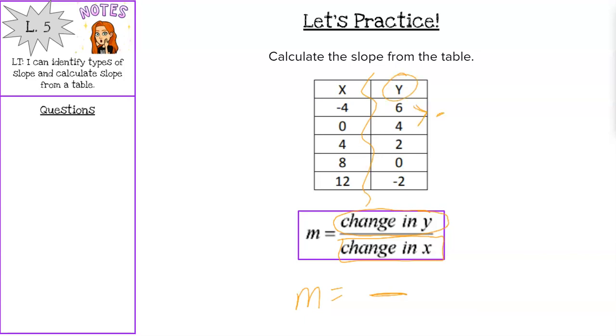Start with my change in y. So six to four, I would need to subtract two. Four to two, subtract two. Two to zero, subtract two. Zero to negative two, subtract two. So my change in y is subtracting two, which makes it negative two. I do need that negative sign. Make sure you bring that with it.